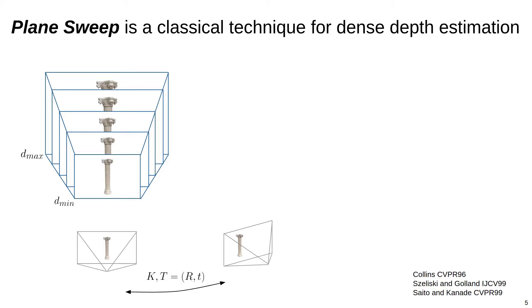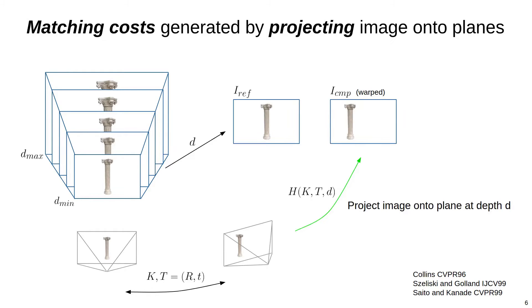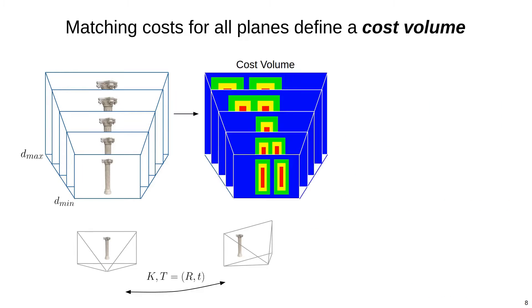Plane sweep will fill in this volume with a matching cost for every pixel and every depth hypothesis before extracting a depth map that minimizes the costs. Matching costs are generated by projecting the comparison image onto the plane at depth d and computing the difference with the reference image. After computing the matching costs for every depth slice, we end up with a 3D cost volume in the reference frame.